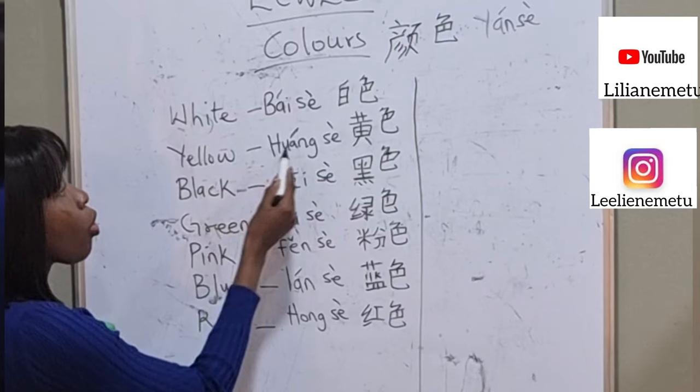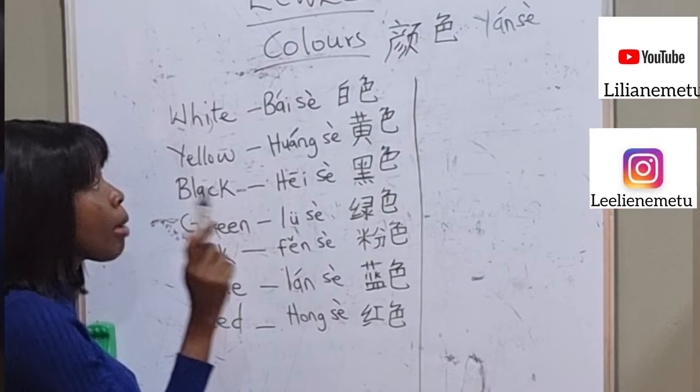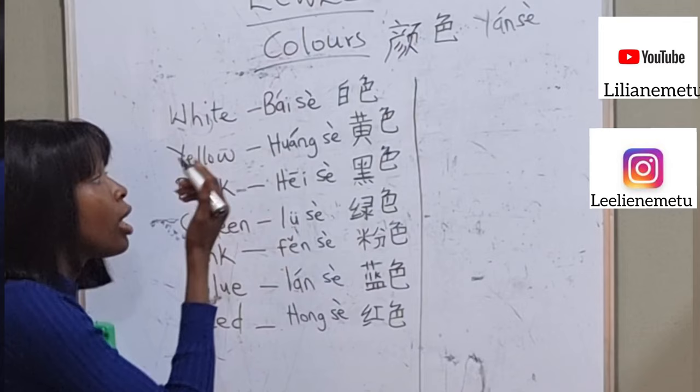White is called bái sè. Black is called hēi sè. Remember the pronunciation tone, because it's one of the things that determines what you are saying. So hēi sè.